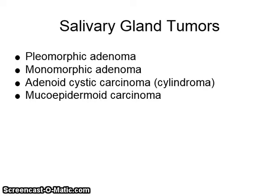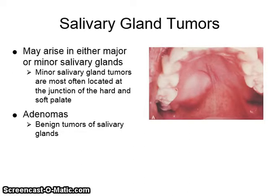Salivary gland tumors include pleomorphic adenomas, monomorphic adenomas, adenoid cystic carcinomas (or cylindroma), and mucoepidermoid carcinoma. Salivary gland tumors may arise in either major or minor salivary glands. Minor salivary gland tumors are most often located at the junction of the hard and soft palate. Adenomas are benign tumors of salivary glands.